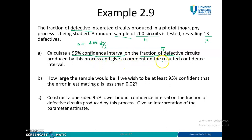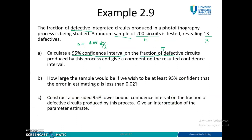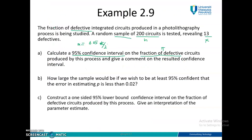For one population proportion, you only have one formula to use, which is on page 5 of your statistical table. From the formula you only refer to the Z table. From the formula you have P, and P is X over N. From the question, your X is 13 because this is defective and they want the defective confidence interval. So X over N gives your P hat as 0.0650.